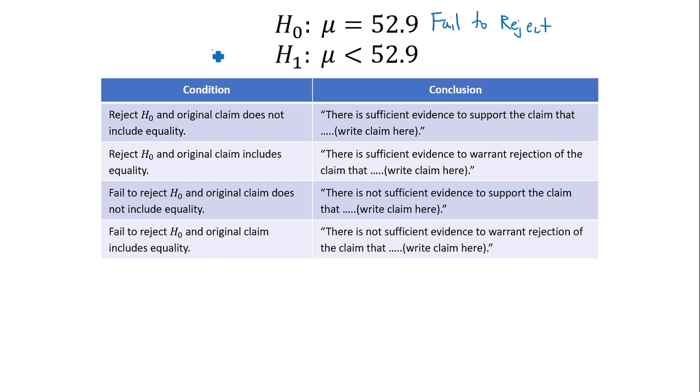My claim in this case was once again the alternative hypothesis. So since I failed to reject the null hypothesis, and the original claim does not include equality, that puts me in the third row here. There is not sufficient evidence to support the claim that whatever the claim is in this case.